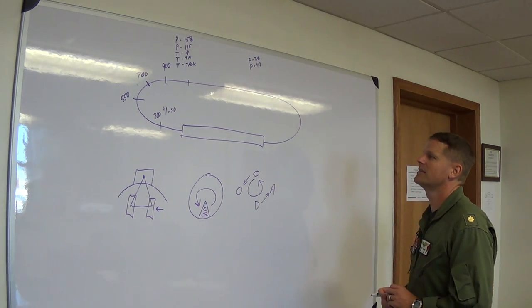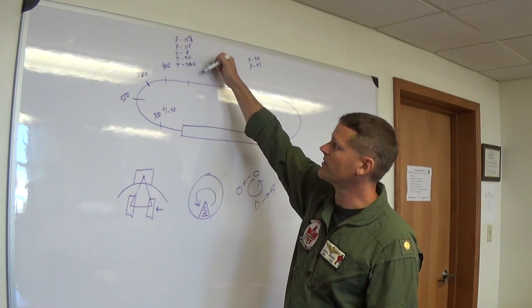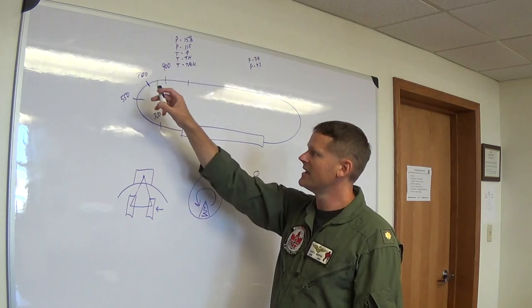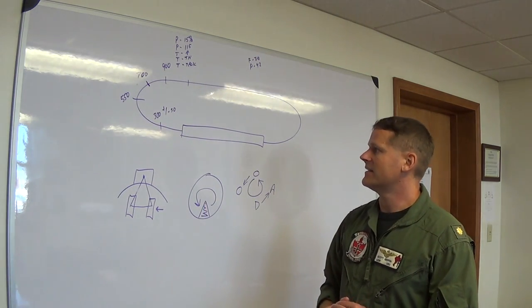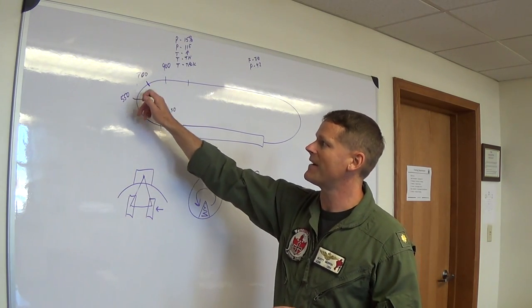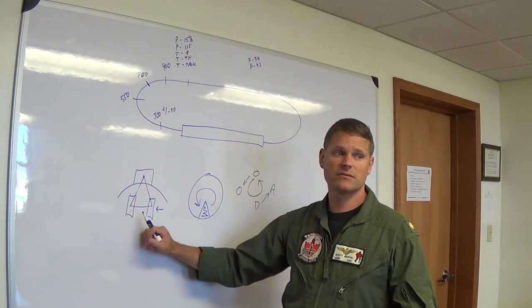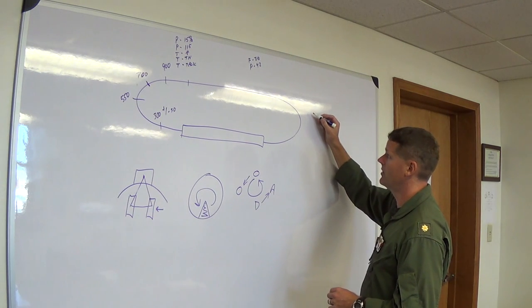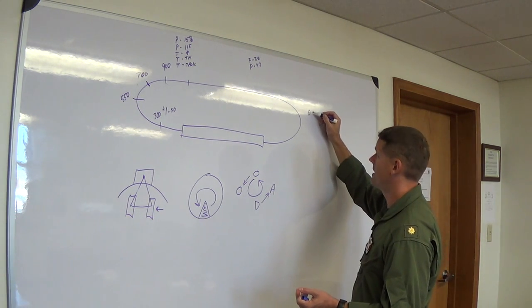Let's talk about that. After the transition — power, pitch, trim, turn, talk — coming from the 180 to the 90, you're hoping to be at 700 feet. Say instead you're at 600 feet halfway through the turn at 115 knots. You're low but on airspeed.